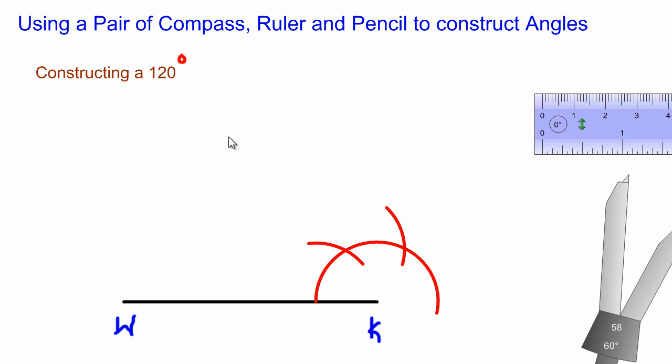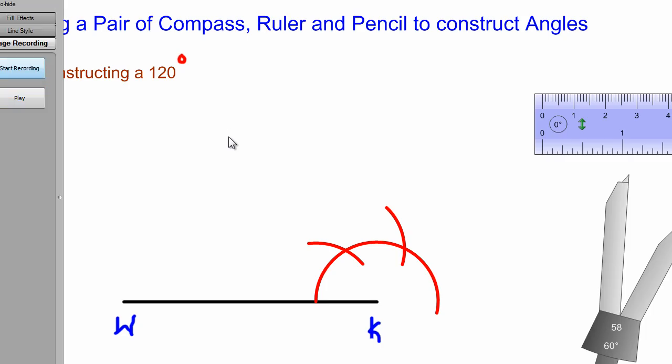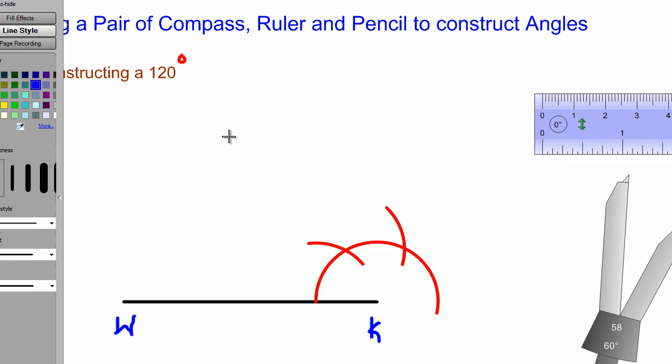Now after you have done this, you would use your ruler to draw a straight line from point K through where the second arc intersects the first arc. Let's just look at that quickly. I'm going to use a blue line. Use your ruler—I have some fancy tools I can use. So from point K here,